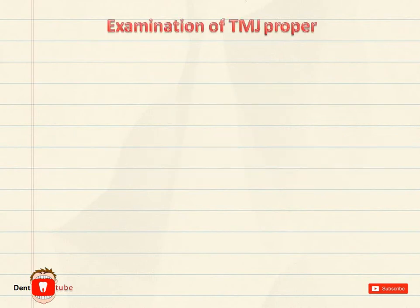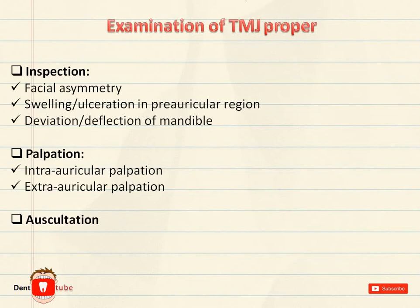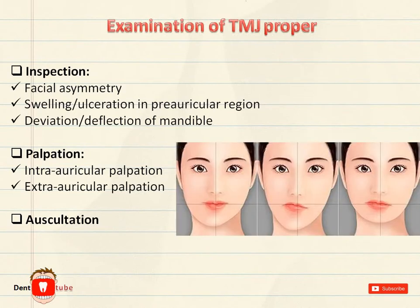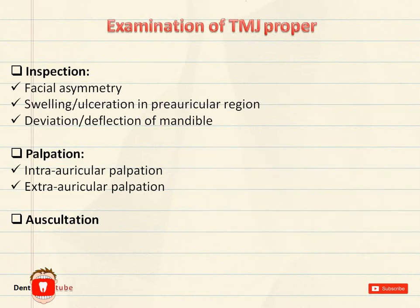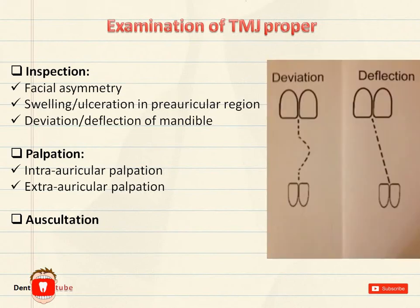Examination of TMJ proper. The TMJ is examined under three basic headings: inspection, palpation, and auscultation. Under inspection, we inspect for facial asymmetry, presence of any swellings, and ulcerations in the preauricular regions. We also observe for deviation or deflection of the mandible on mouth opening. If the mandibular midline moves to one side in the initial stage of mouth opening and then returns back to the original position at maximal mouth opening, it is called deviation.